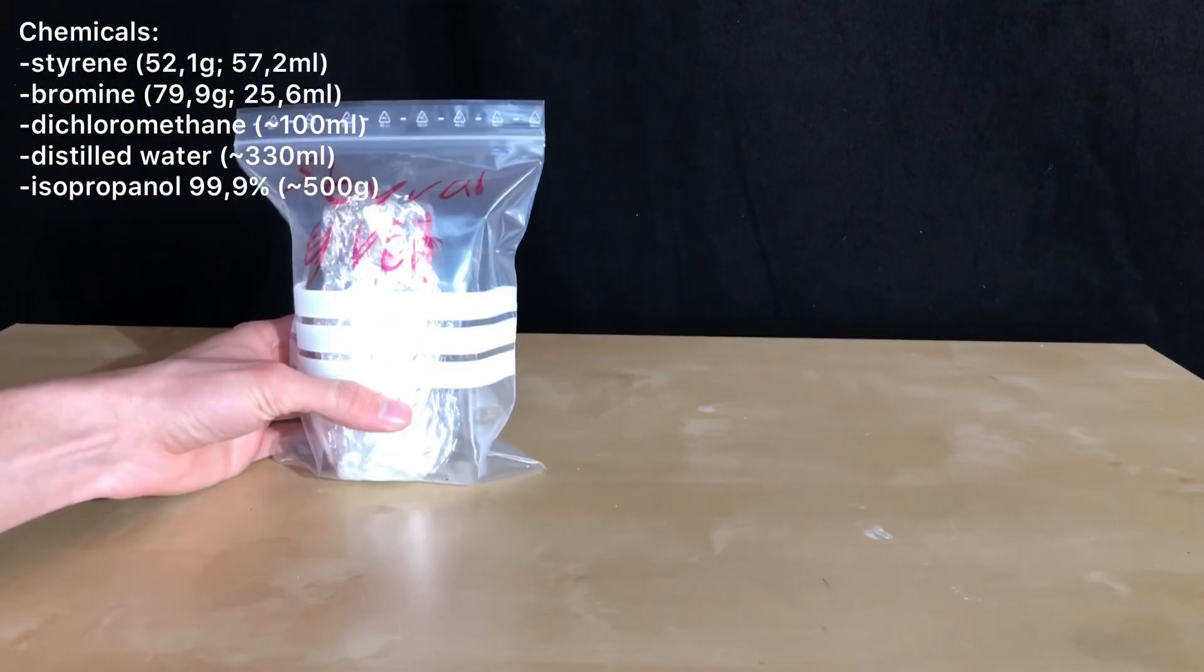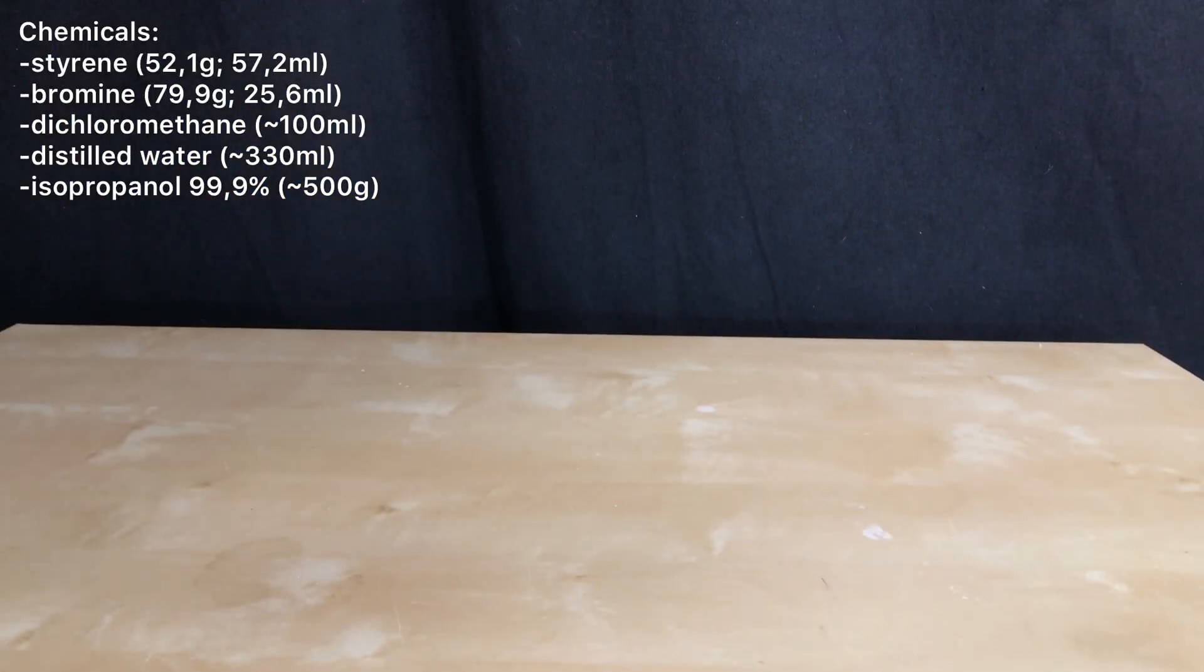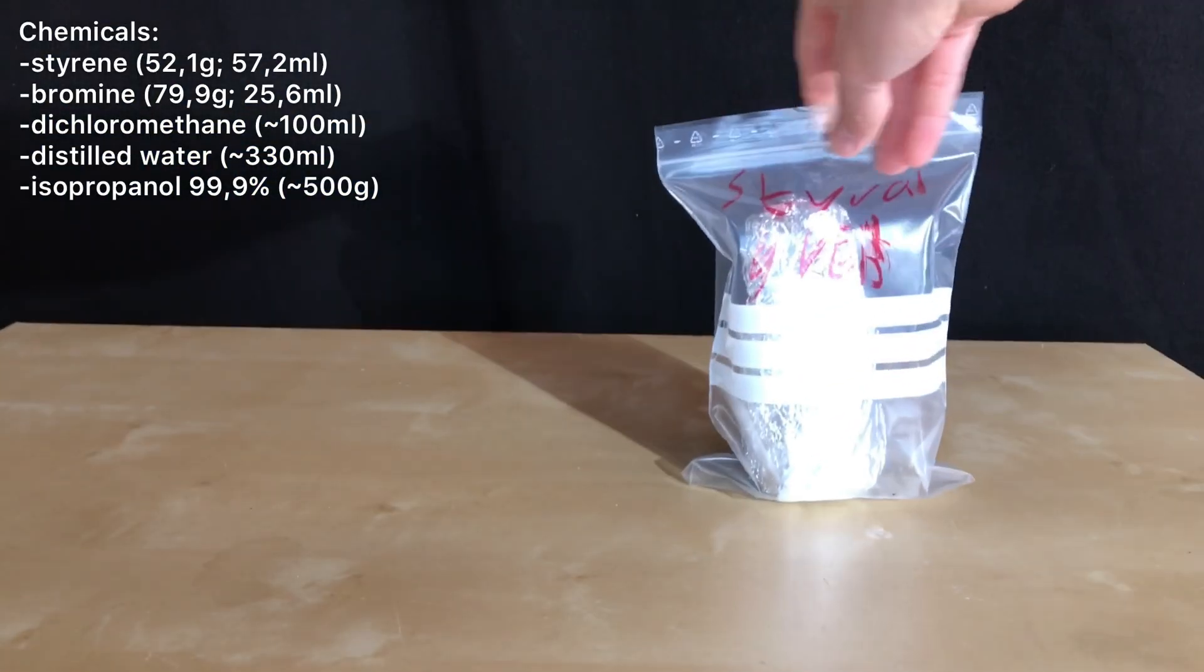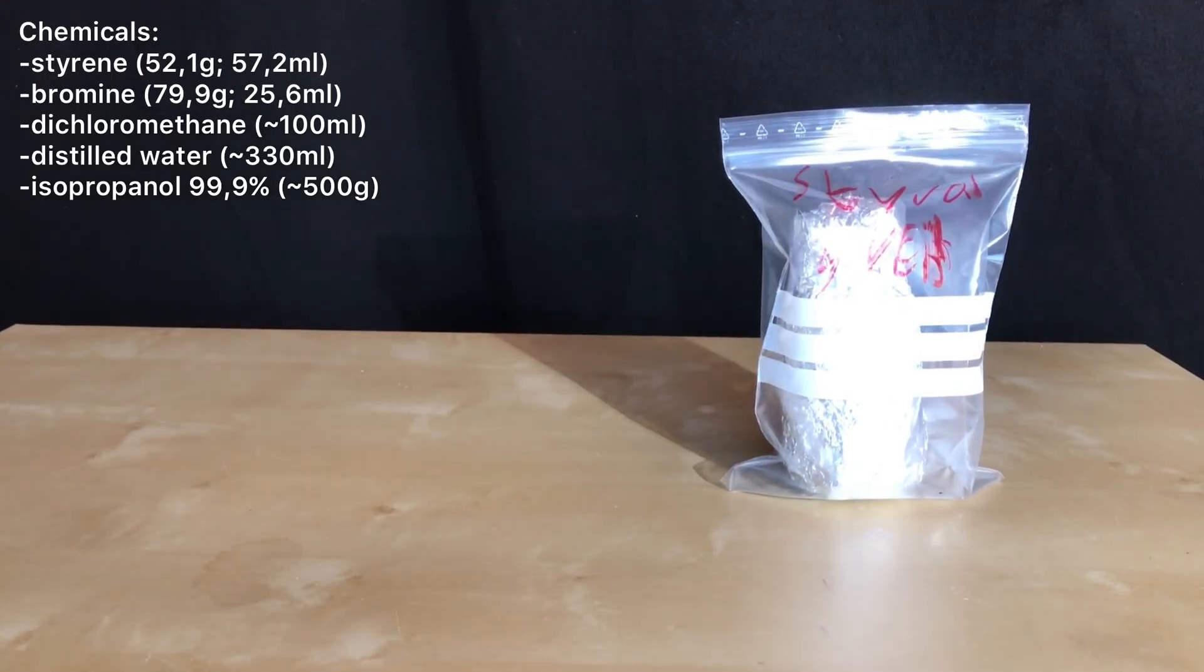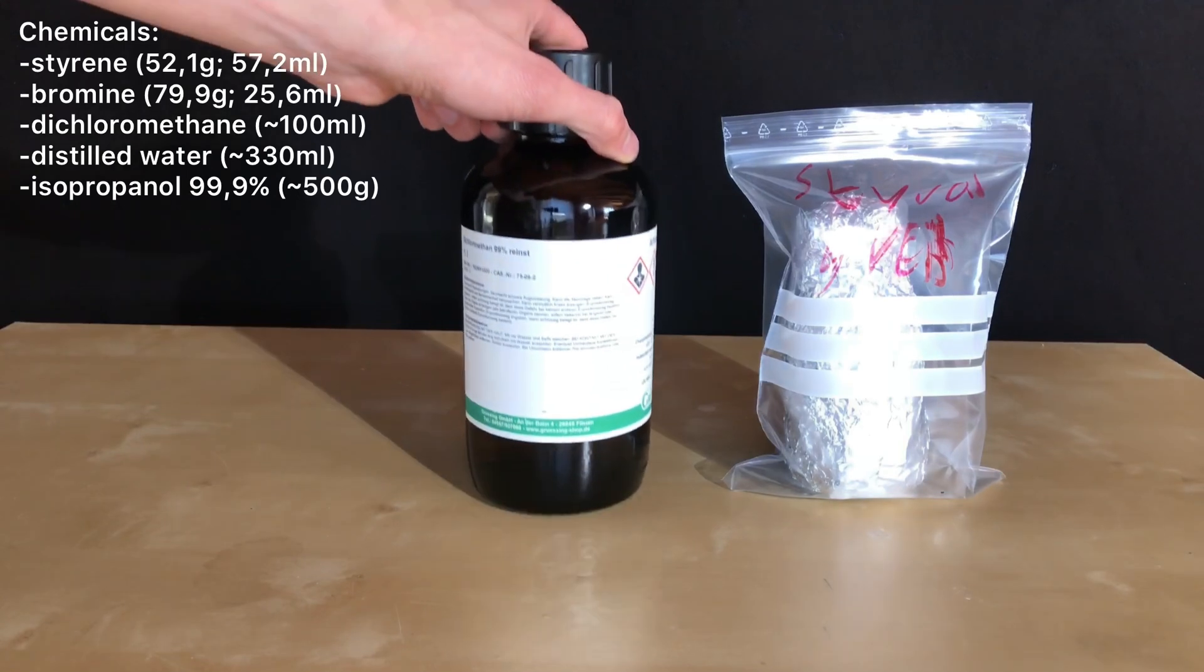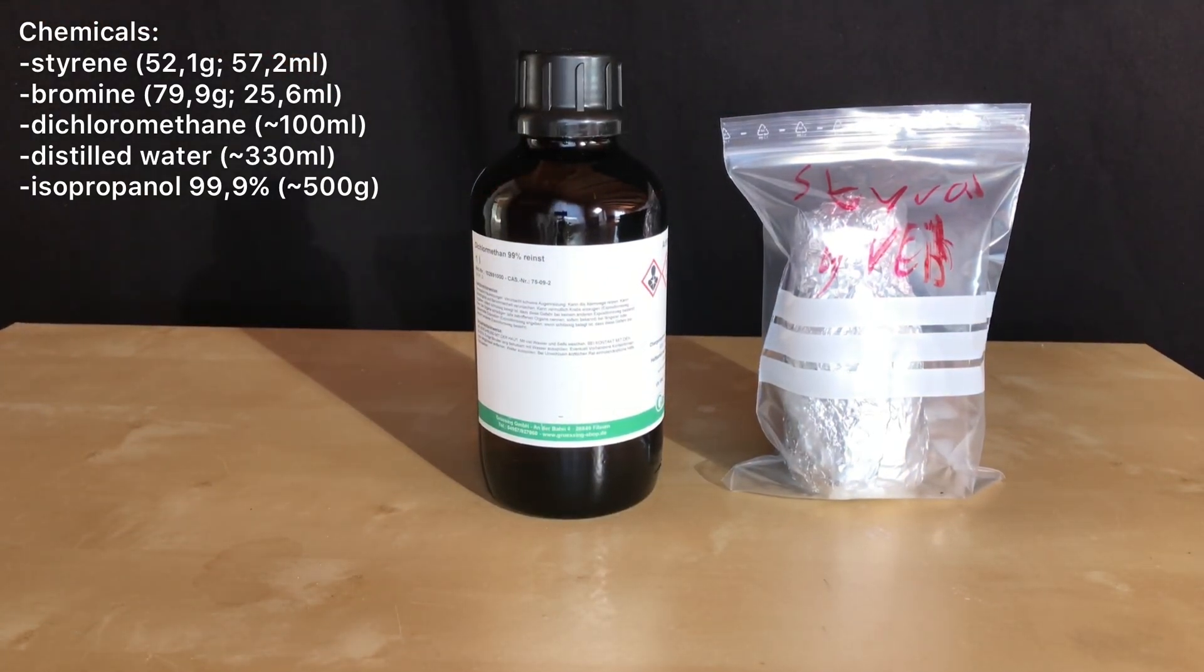Welcome back everyone, today we are going to make some 1,2-dibromo-1-phenyl-ethane by brominating styrene. The preparation requires 57.2 ml of styrene, 25.6 ml of bromine and about 100 ml of dichloromethane.